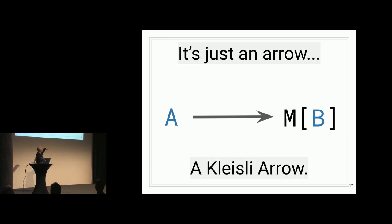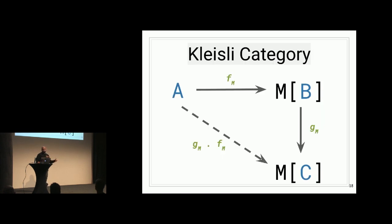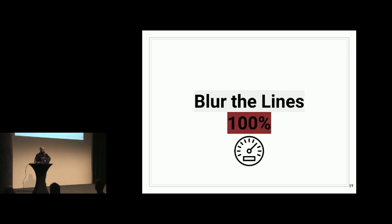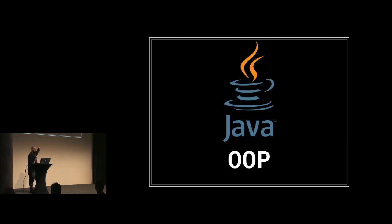If we then turn up the knob to 95%, we end up with a Kleisli arrow. We end up with A to MB. So you'll notice that the question mark that was originally shrouding this computation is now represented as this type constructor M. And it's known as a Kleisli arrow. And it belongs in what's called the Kleisli category. So it's a morphism in the Kleisli category. And we're going to come back to Kleisli category. I just wanted to show this up front so that we can work toward it. So if you're wondering, we just turned the knob to 95%. What happens if we turn the knob to 100% and we obscure all the details in the software? You get object-oriented programming.